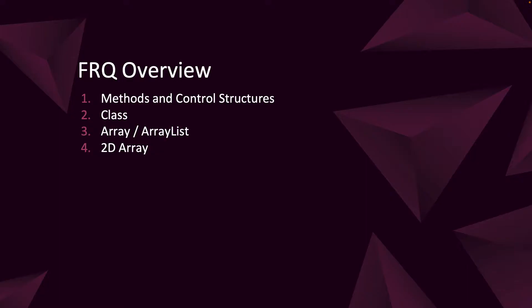The first thing we're going to do is look at the actual structure of the FRQ exam itself. That section of the exam has four questions. They're all worth the same amount. We have the methods and control structures question first — it's also the easiest. Then we have our class or design question. Next we have an array or ArrayList question for Q3, and Q4 is always going to be about working with a 2D array.